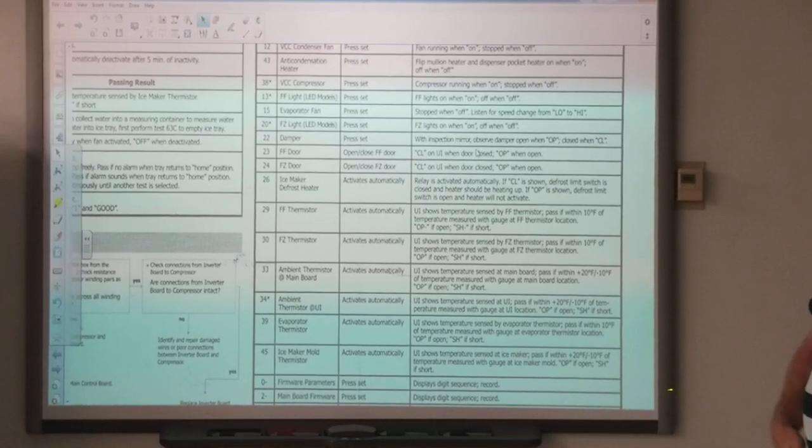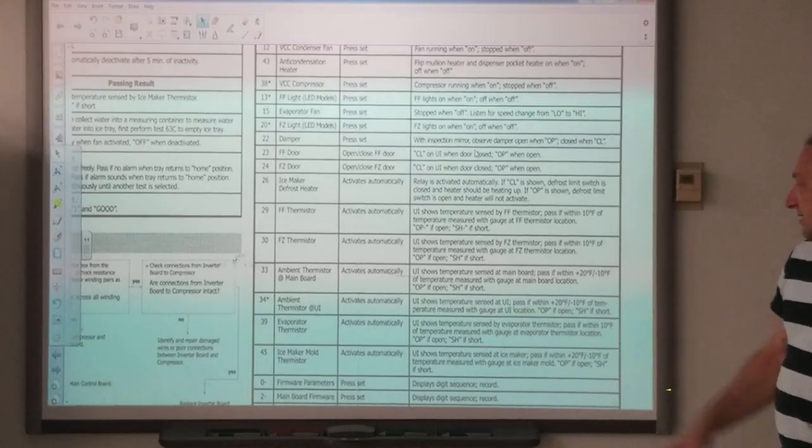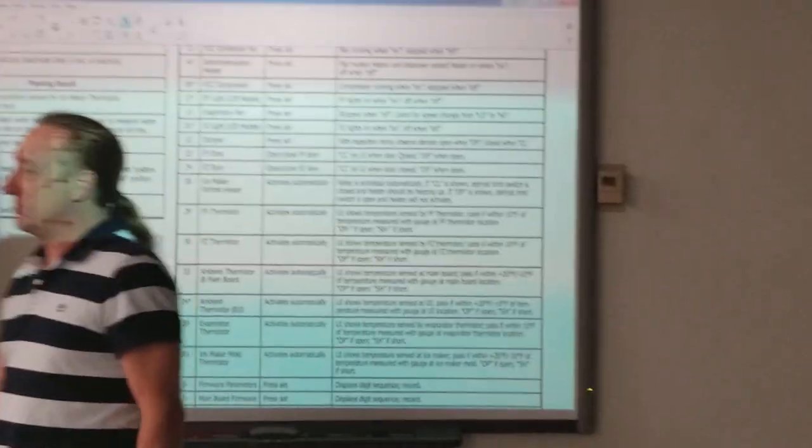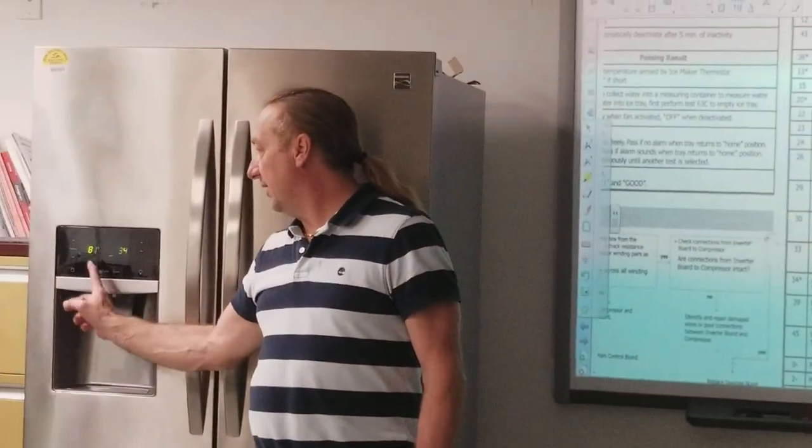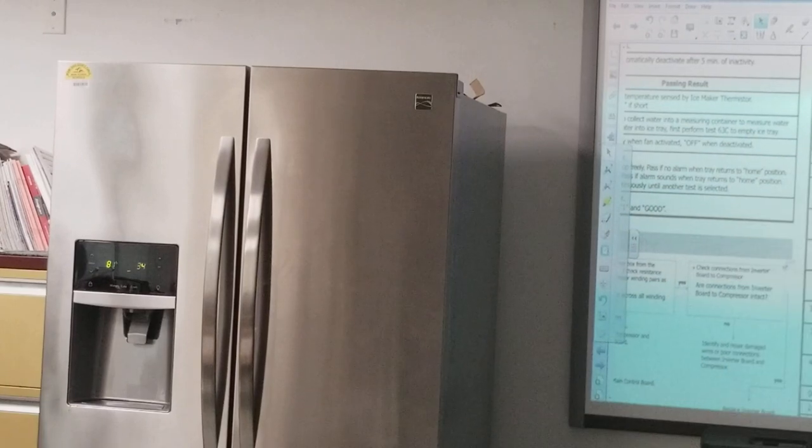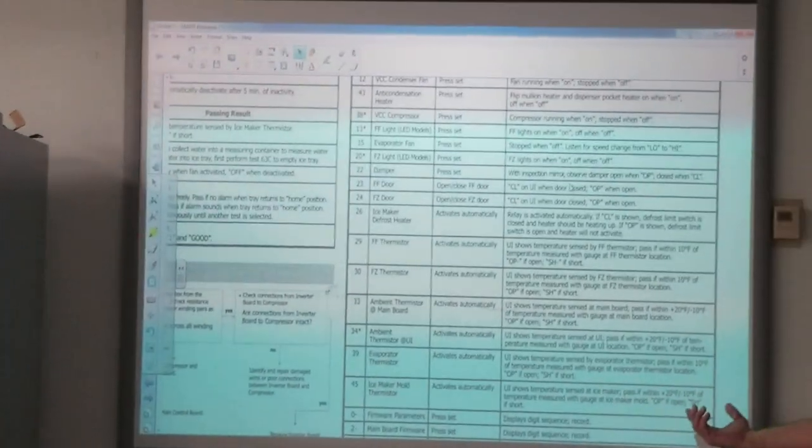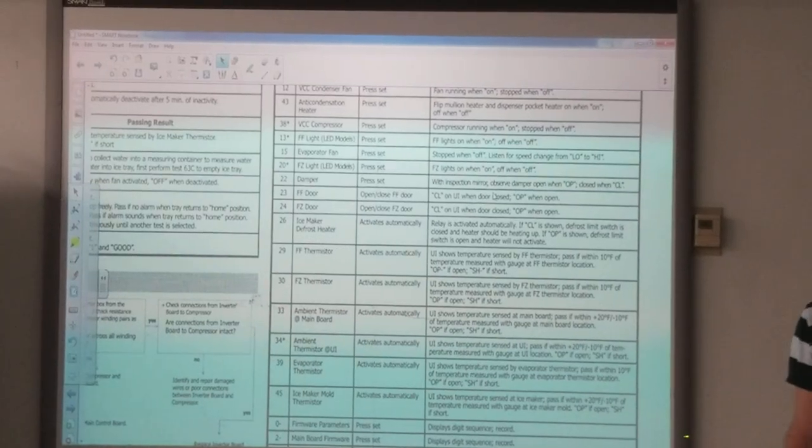Test 34. The user interface shows temperature at the user interface. So now we have another ambient thermistor up here. It's 81 degrees up in this area right here. I guess they just want to check the temperature of everything.